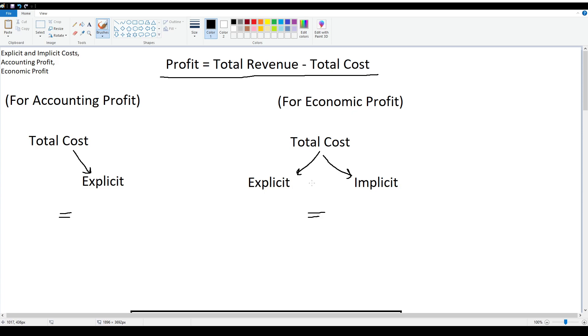So what that's going to look like is something like this, where the accounting profit is going to be total revenue minus explicit, but economic profit is going to be these two combined instead of just explicit.